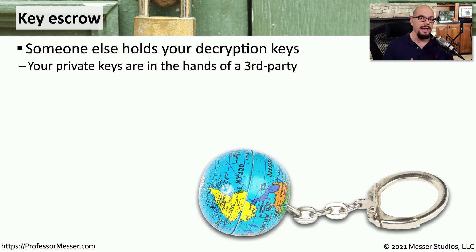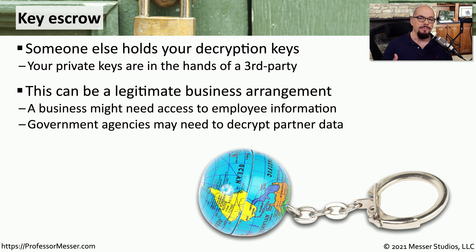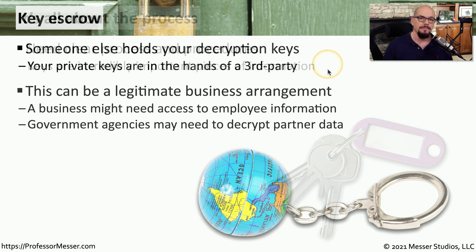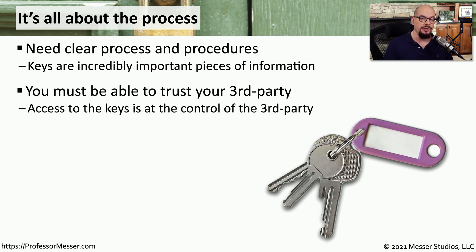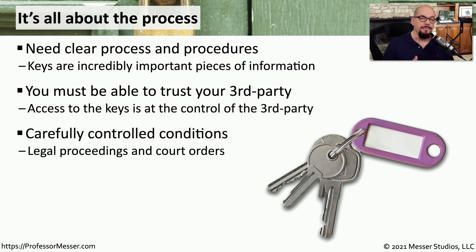There may be cases where you need to have a third party hold onto the decryption keys used in your organization — meaning you hand over your private keys to a third party, and they only use those keys in particular situations. For example, you might store private information about employees in encrypted form, and access is only granted when validated by the third party holding the decryption keys. There need to be very specific processes and procedures in place, and you must be able to trust that third party and be assured they're using proper security to keep private keys safe. There may even be specific circumstances — such as court orders or legal proceedings — required before anyone can gain access to those decryption keys.